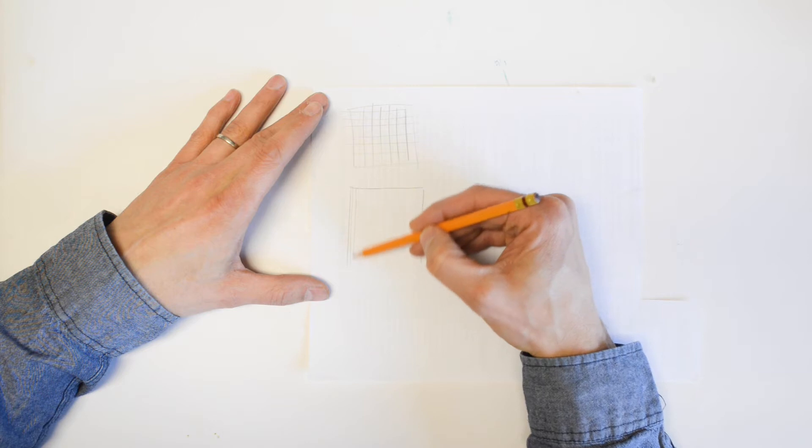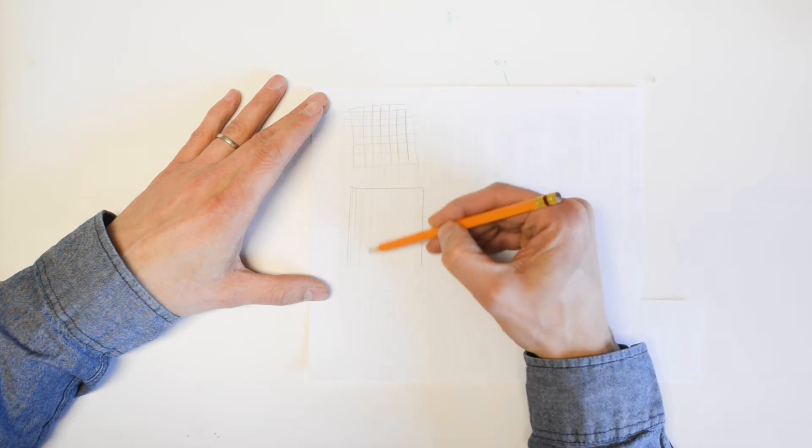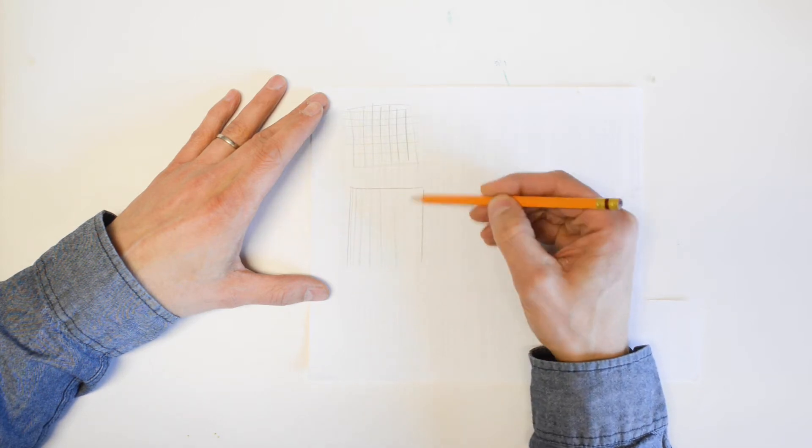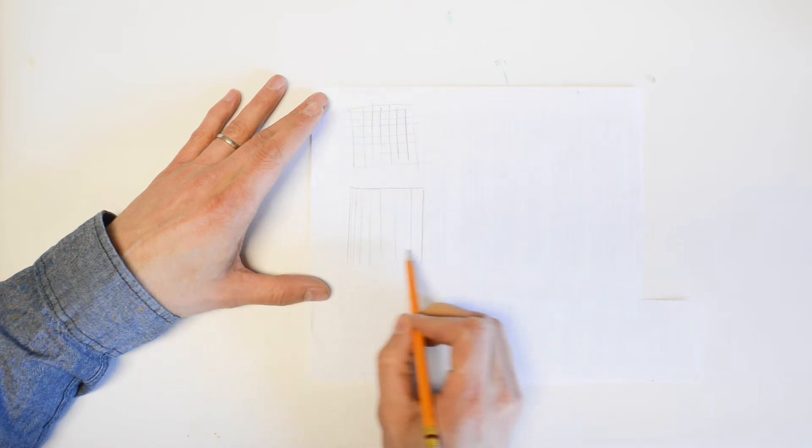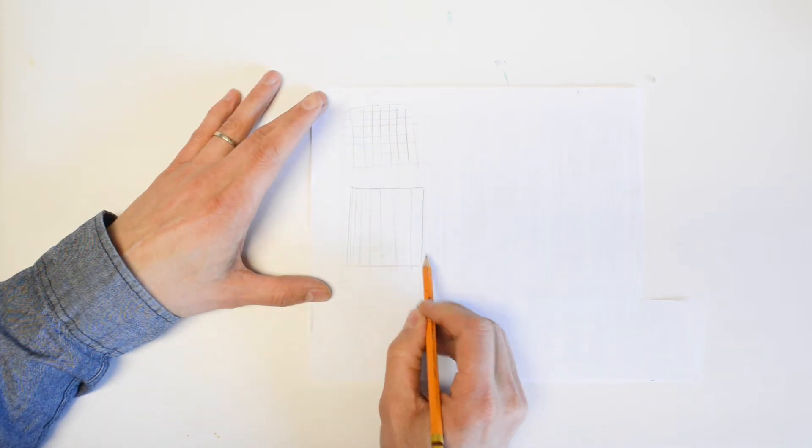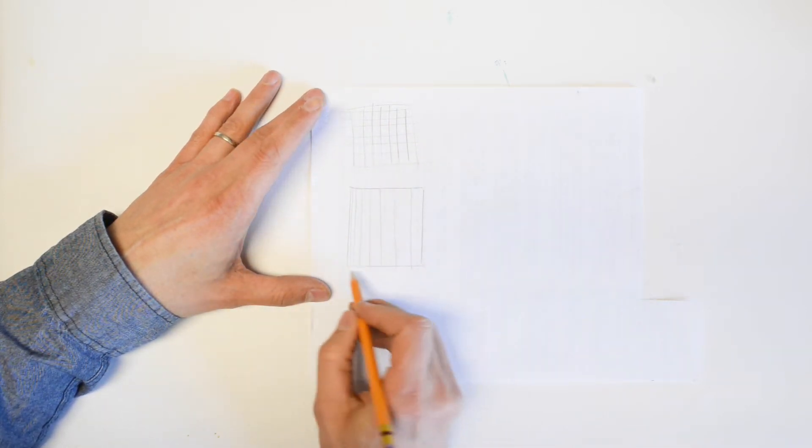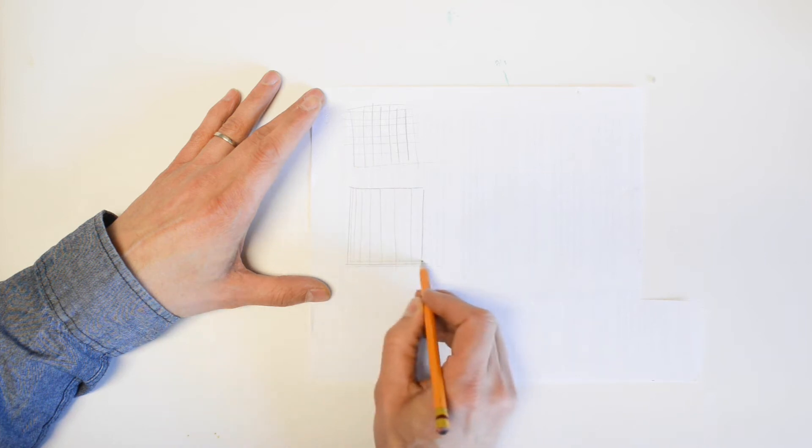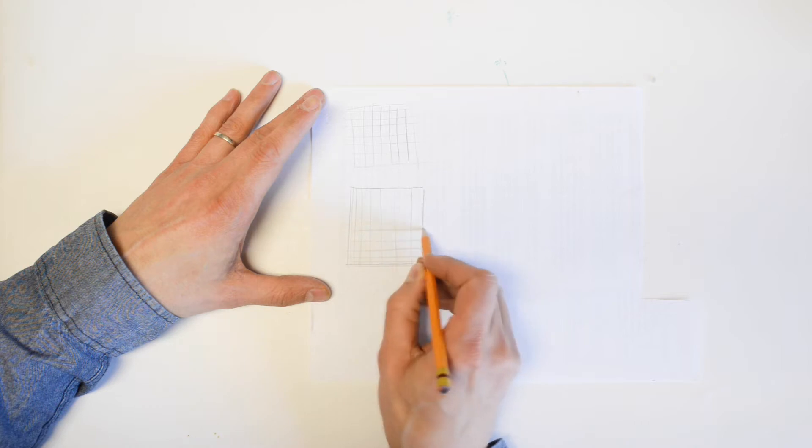So I could take all those vertical lines and maybe I put them closer together here but they start to relax as they come across like this, getting wider and wider. I could leave all the ones otherwise or I could do something like this where they're closer down here and they relax and get further and further apart as they go up.